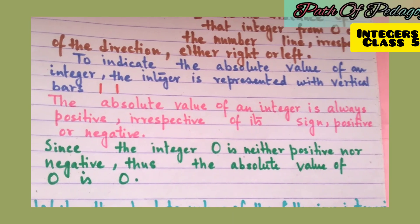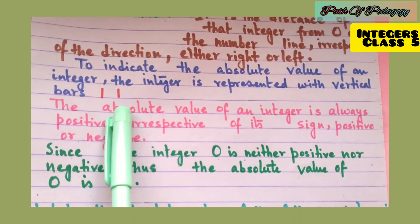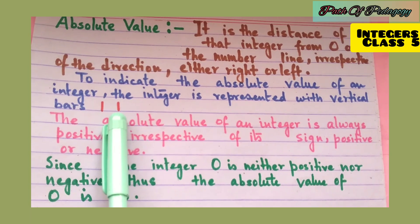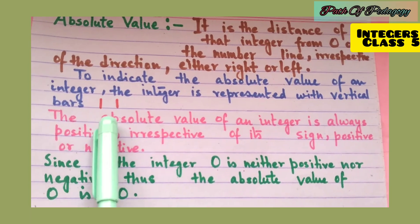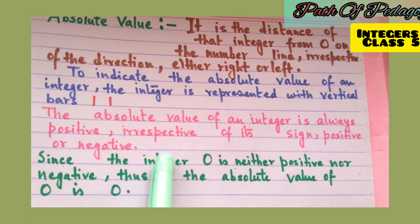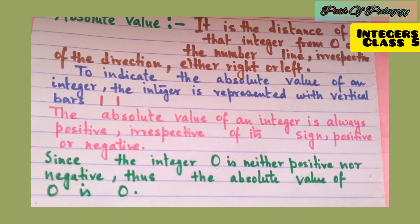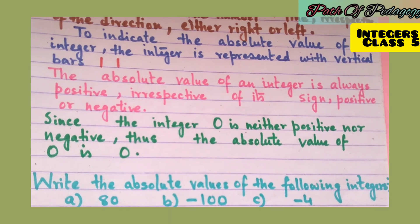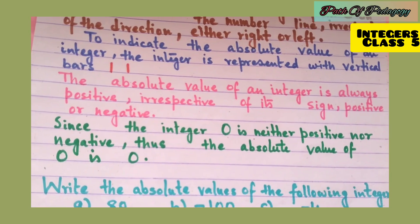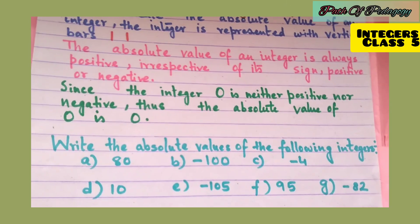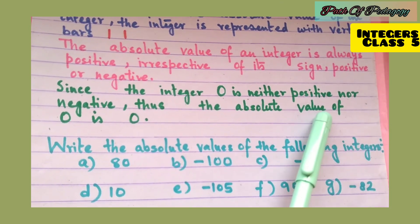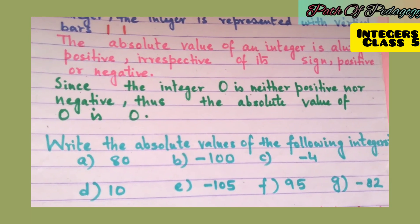These vertical bars are the signs of absolute value. The absolute value of an integer is always positive, irrespective of its sign — whether it is a positive or negative integer. And since the integer 0 is neither positive nor negative, the absolute value of 0 is 0.